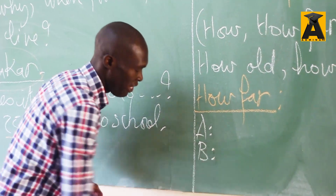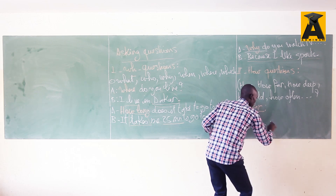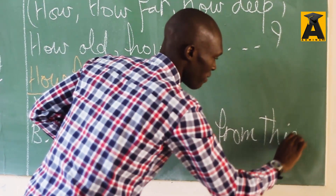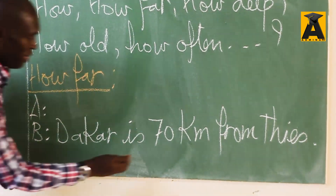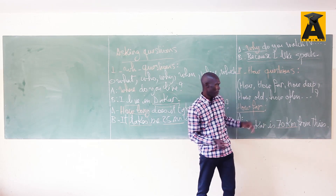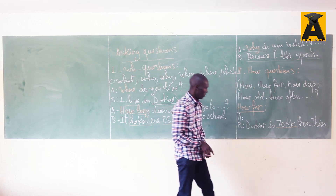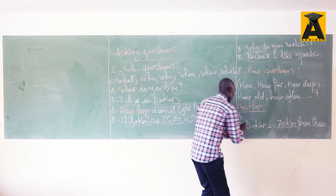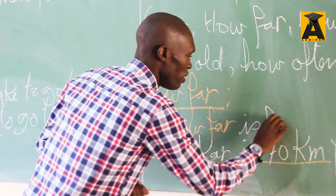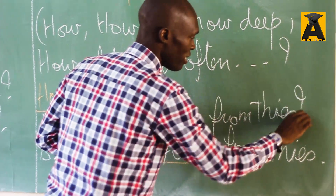For example: 'Dakar is 70 kilometers from Kess.' We underline 70 kilometers and you are asked to pose a question whose answer will be 70 kilometers. The question word to use here is 'how far.' So the question becomes: 'How far is Dakar from Kess?' — with a question mark. These are the question words used at the examination.